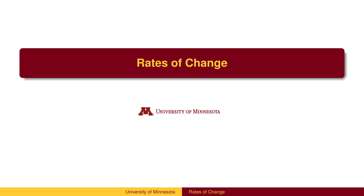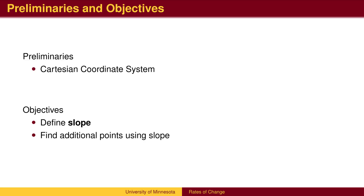Rates of Change. You should be familiar with representing data on the Cartesian coordinate system. In this lesson, we will define slope and use it to find information about other data points on a line.